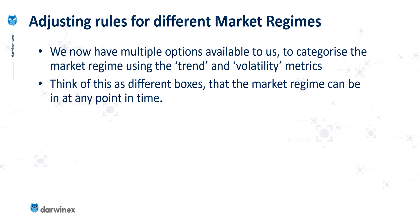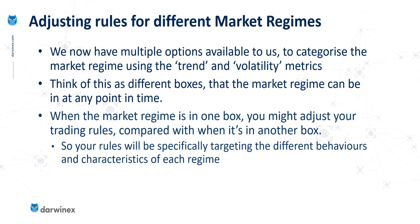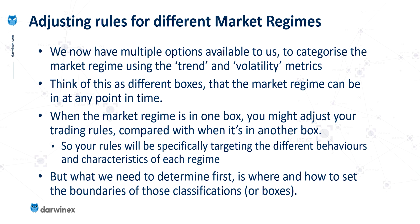Based on what we've already learned, we now have multiple options available to us in order to categorize the market regime using trend and volatility metrics. One way of looking at this is that each classification of market regime is like a box, and the market can be in any one of those boxes at any one time. Depending which box or classification the market regime is in, you then have the opportunity of adjusting your trading rules to specifically target the different behaviors of that regime. But before we can do any of that, we first have to know how to set the boundaries or the edges of those classifications.